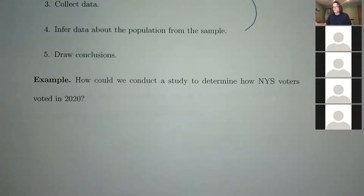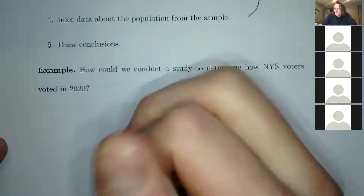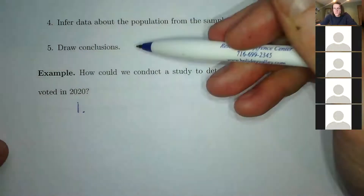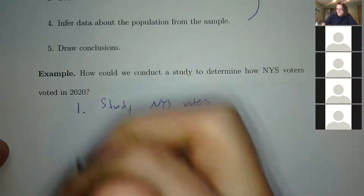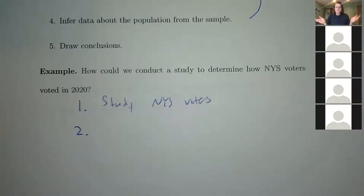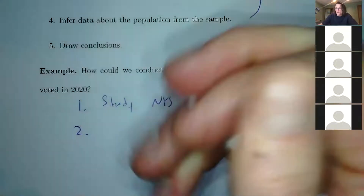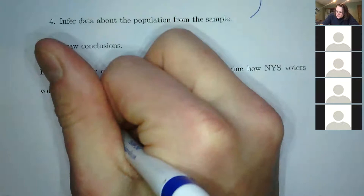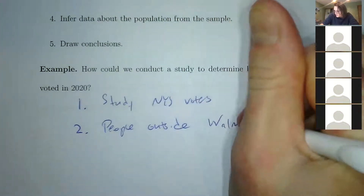Example: How can we conduct a study on how New York state voters voted? Step 1 — state your goal: study New York state voters. Step 2 — choose a sample. The sample of people outside Rite Aid or Walmart in Cattaraugus County is going to be vastly different from people in Albany or downstate. So our sample will be people outside Walmart who will talk to us.